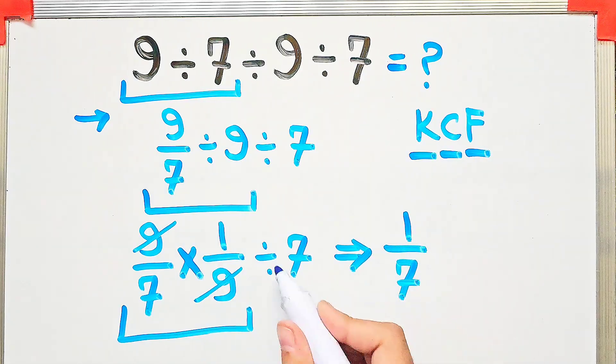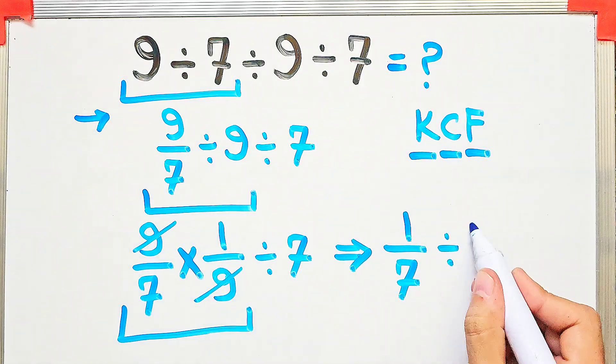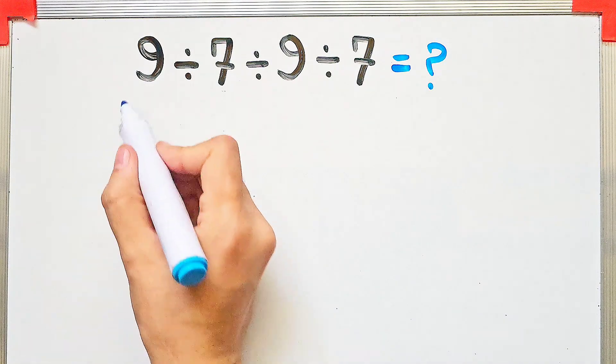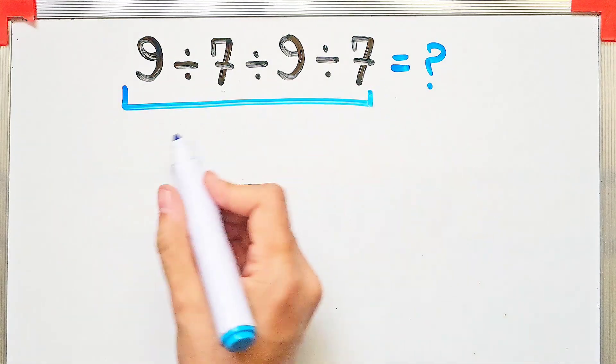Now we have 1 over 7 divided by 7. Again, to solve this part, we need to follow the KCF rule. We have 1 over 7, then divided by 7.